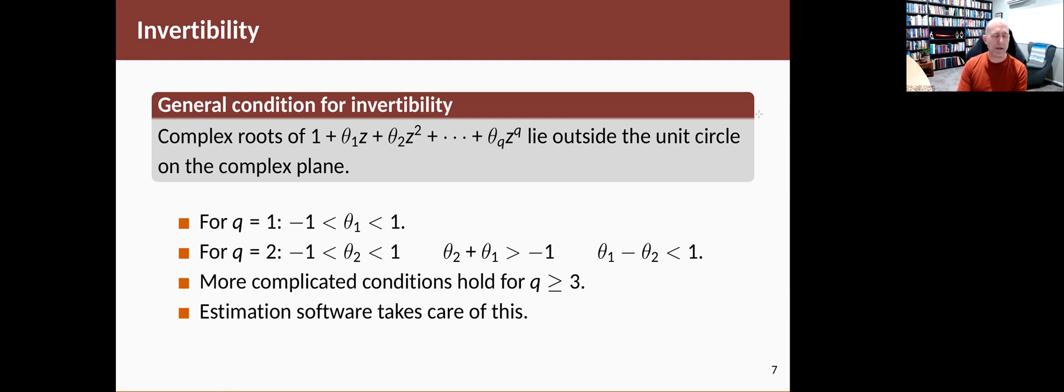So for Q equals 1, that just means that theta has to be between -1 and 1. For Q equals 2, it means that θ2 has to be between -1 and 1. The sum of them has to be greater than -1, and the difference of them has to be less than 1. For Q bigger than 2, it's much more complicated and difficult to write down in that form. But Fable will take care of it all. So you don't really need to think about whether your model is invertible or not. If you fit it using Fable, it will work.